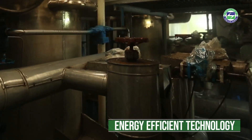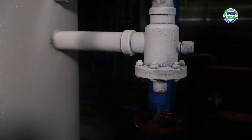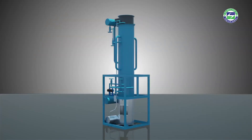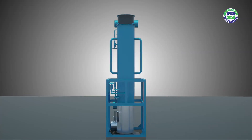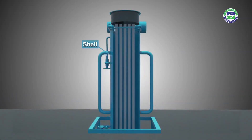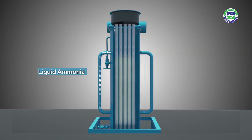An energy efficient alternative to conventional ice plants is the tube ice plant. The plant has an ice generator as its main part, which is a shell and tube vessel. The shell consists of water tubes with water distributors fitted on top of each tube, and the refrigerant ammonia fills the space between the tubes.